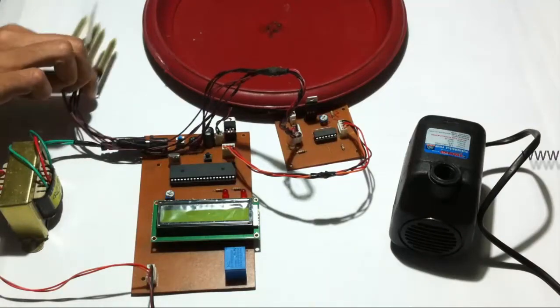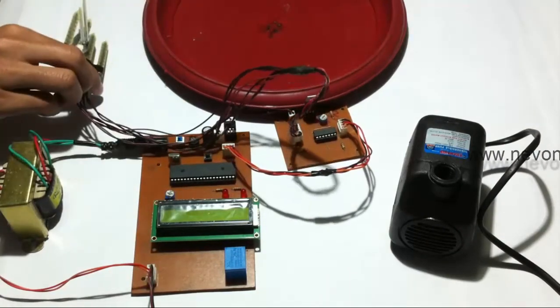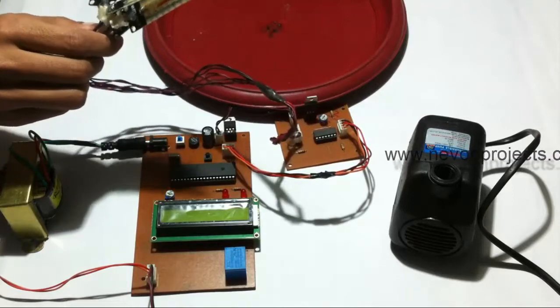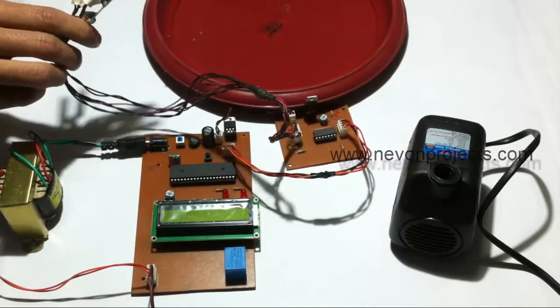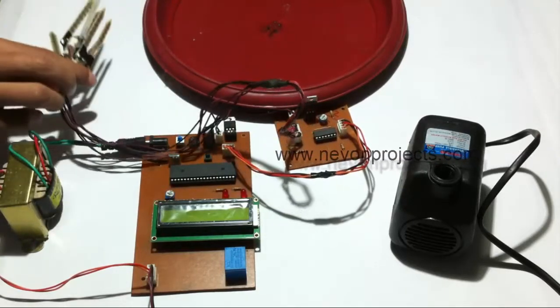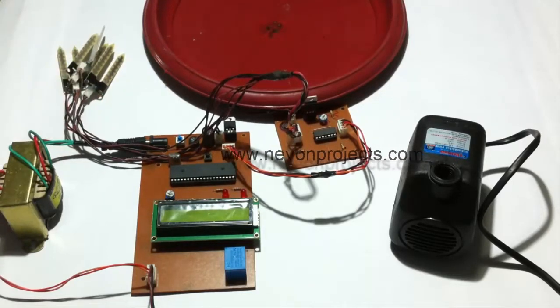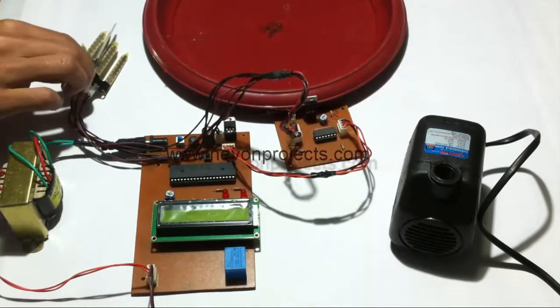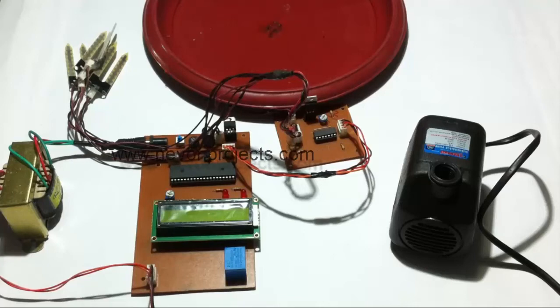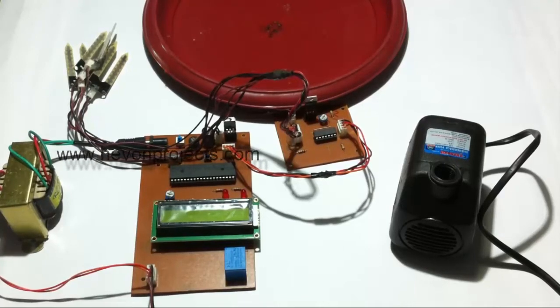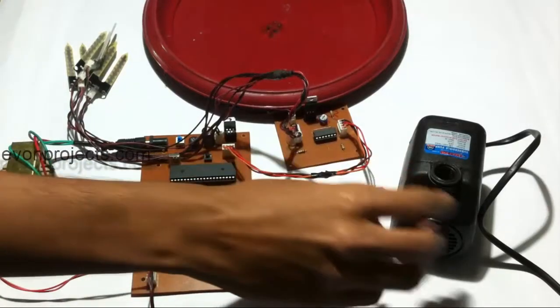These sensors would be buried in the soil at four different areas on the field. These sensors are used to sense the moisture content and they are used to turn on the pump.